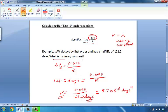So the decay constant here is 5.7 times 10 to the minus 3 inverse days.